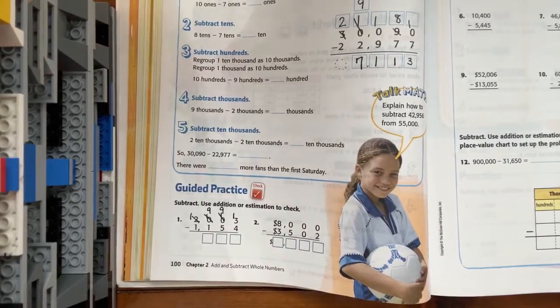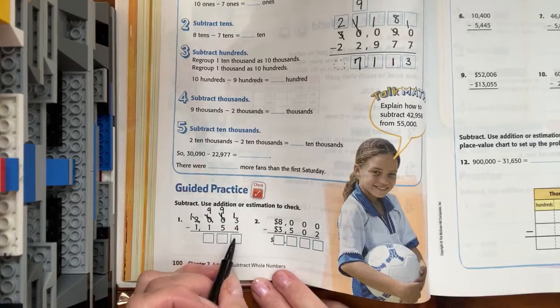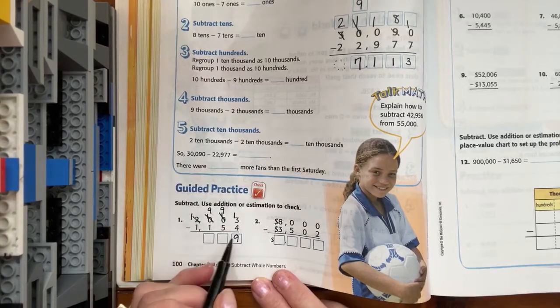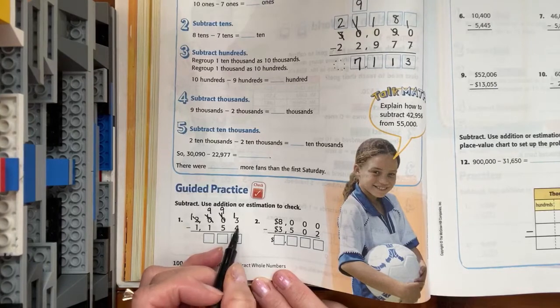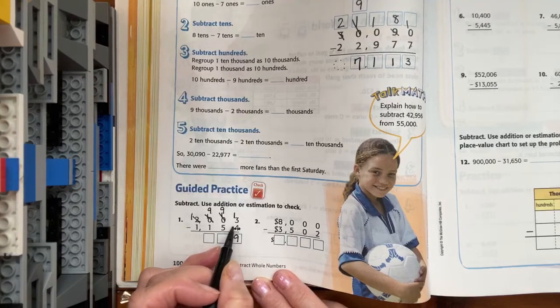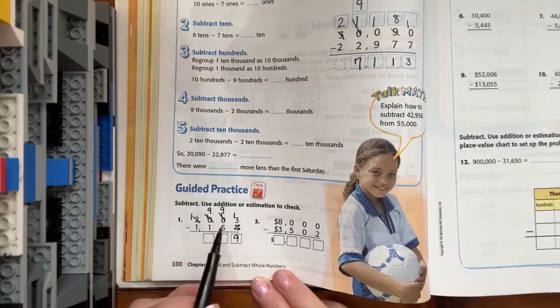Thirteen count backwards. Twelve, eleven, ten, nine. Let's record our nine. Because nine plus four. Ten, eleven, twelve, thirteen. Using touch points.